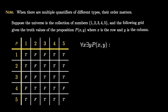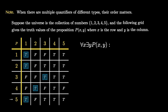Let's start by investigating the proposition 'for all x there exists a y such that P(x, y).' The universal is attached to x, so for every single row we must find at least one column with a true value. Row 1 has true in column 1, row 2 has true in column 1, row 3 we go to column 3 before we find a true value, row 4 we go to column 2, and row 5 we find a true value in column 1. Since every single row has at least one true value, the proposition 'for all x there exists y, P(x, y)' is true.